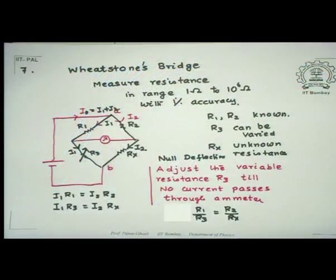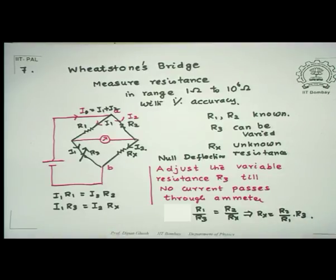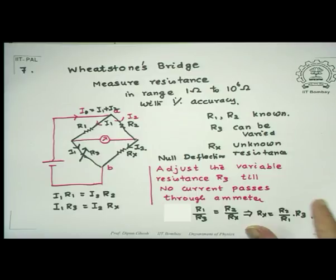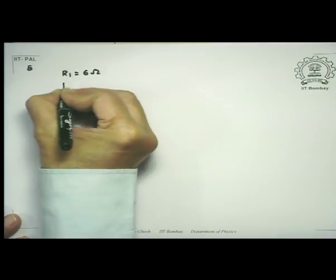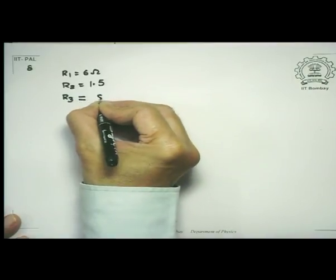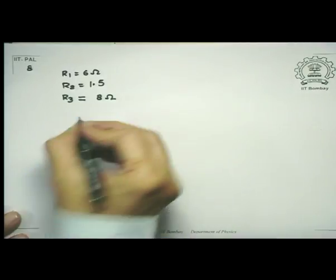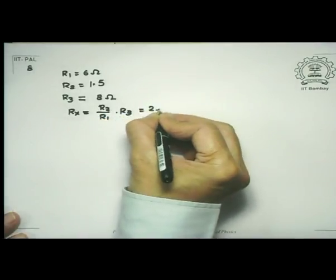For example, if R1 = 6 ohms, R2 = 1.5 ohms, and null deflection is achieved at R3 = 8 ohms, then Rx = (R2/R1)·R3 = 2 ohms. If Rx were slightly different, say 2.01 ohms, a small current would pass through the galvanometer.